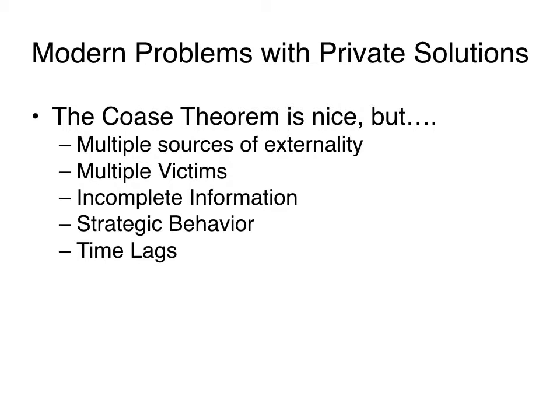Other issues include time lags between the cause and the effect of the externality, making it difficult to identify the externality and its source. There are also transaction costs, social mores, and just lots of things that can make the true enactment of the Coase Theorem difficult to do in real life.